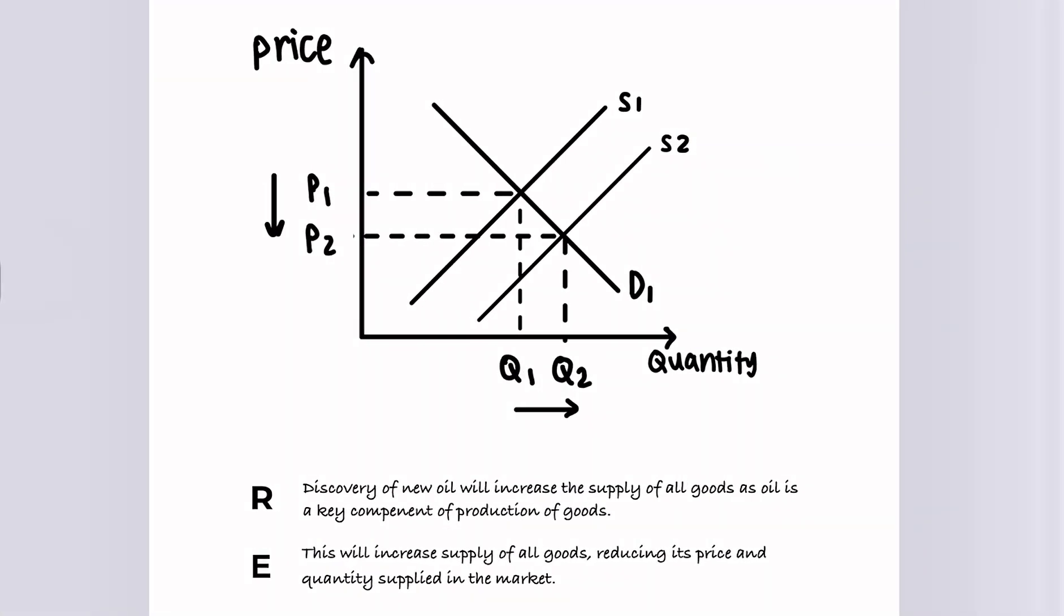So here's another example. A discovery of new oil will increase the supply of all goods, as oil is a key component to the production of goods. And the effect of this is that this will increase the supply of all goods, which reduces its price and quantity supplied in the market.